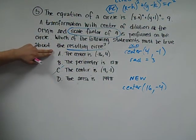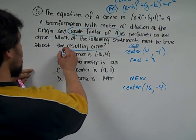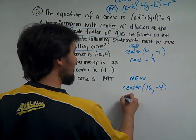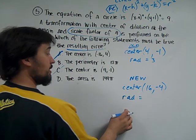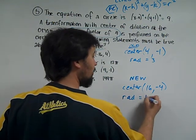Notice how these are exact opposites, so it's not going to be A. And the new radius will be 3 times 4, which is 12.